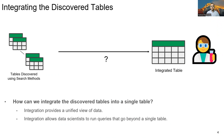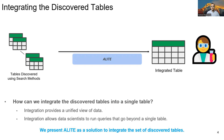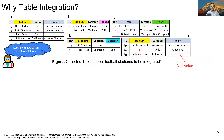After a data scientist collects the tables using different discovery methods, the next natural step is to integrate the collected tables. The integration of tables can make analysis richer as it provides a unified view of data and allows data scientists to run queries that go beyond a single table. So in this work, we present ALITE as a solution to integrate the set of discovered tables.